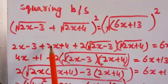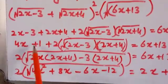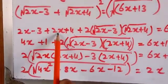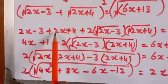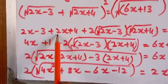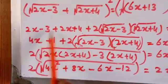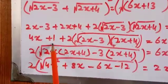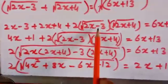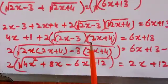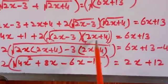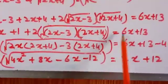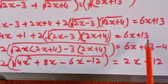Simplifying: 2·√(2x − 3)·√(2x + 4) = 6x + 13 after collecting terms on the left side.